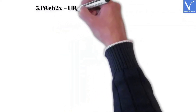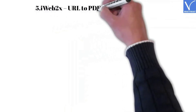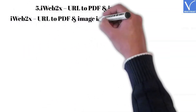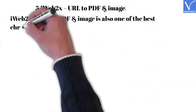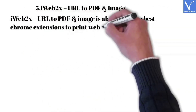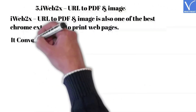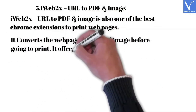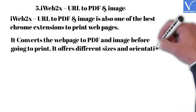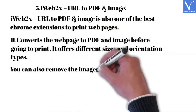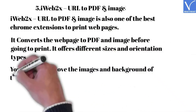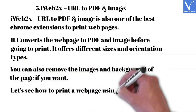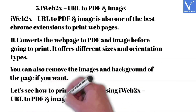Number 5: iWeb2x URL to PDF and Image. iWeb2x URL to PDF and Image is also one of the best Chrome extensions to print web pages. It converts the web page to PDF and image before going to print. It offers different sizes and orientation types. You can also remove the images and background of the page if you want. Let's see how to print a web page using iWeb2x URL to PDF and Image.